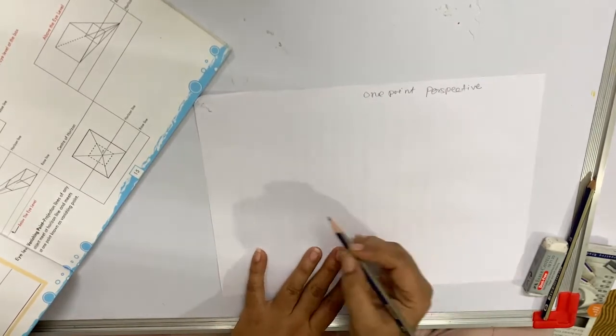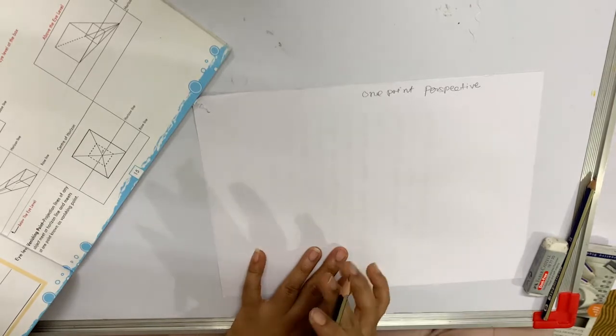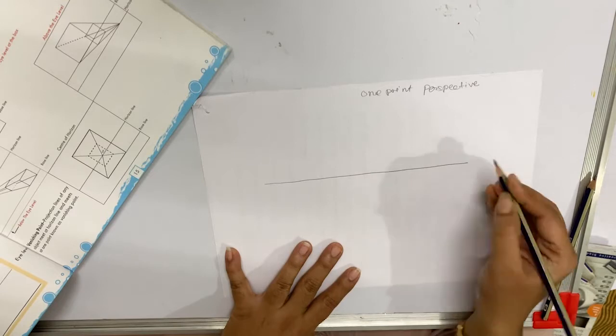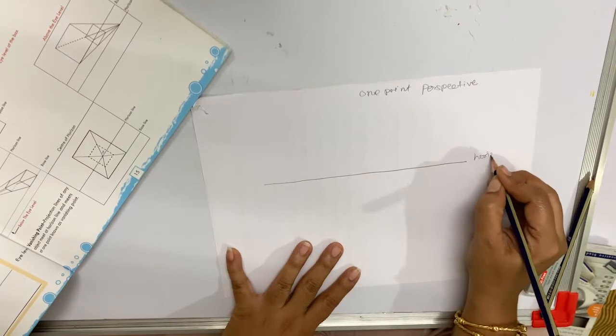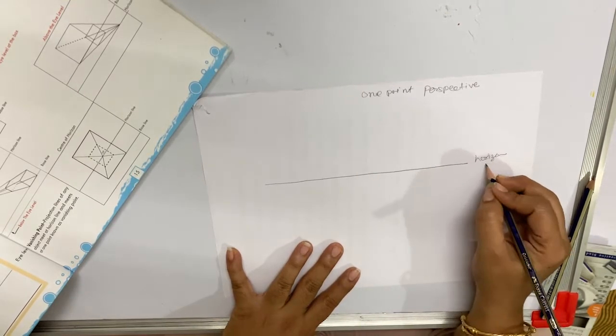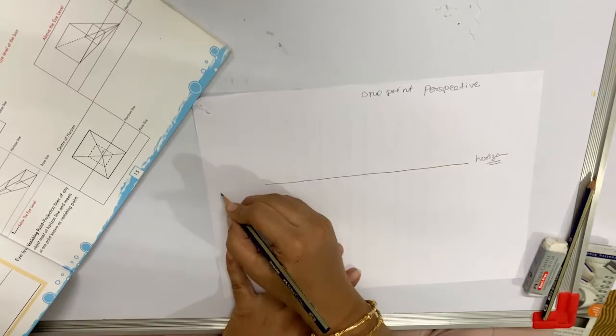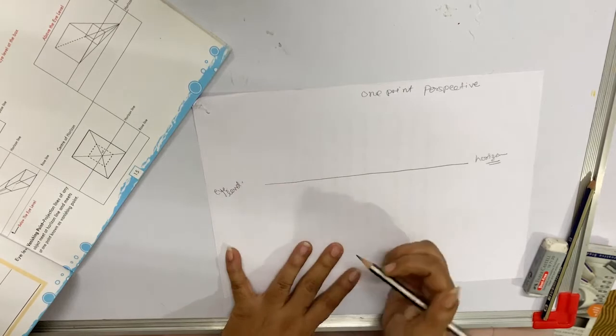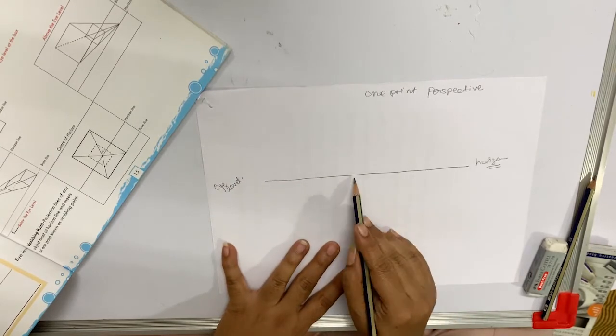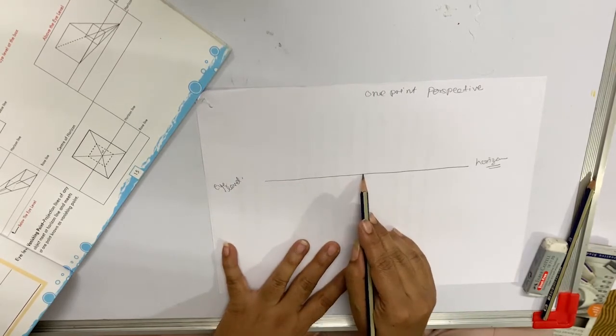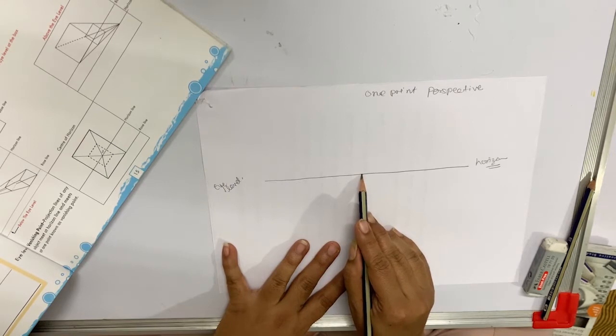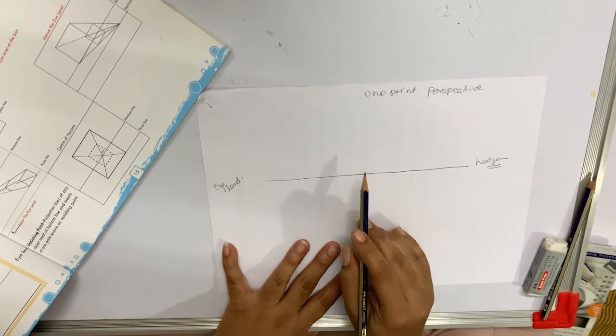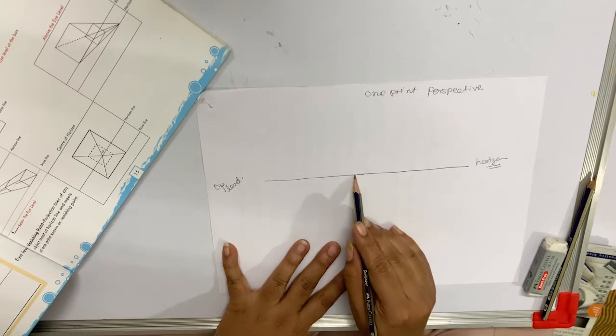In one point perspective, you need one horizon line. The horizon line is basically a line which defines your eye level. So when you are standing in front of the sea, you can see one line where the water and sky looks like they are meeting.